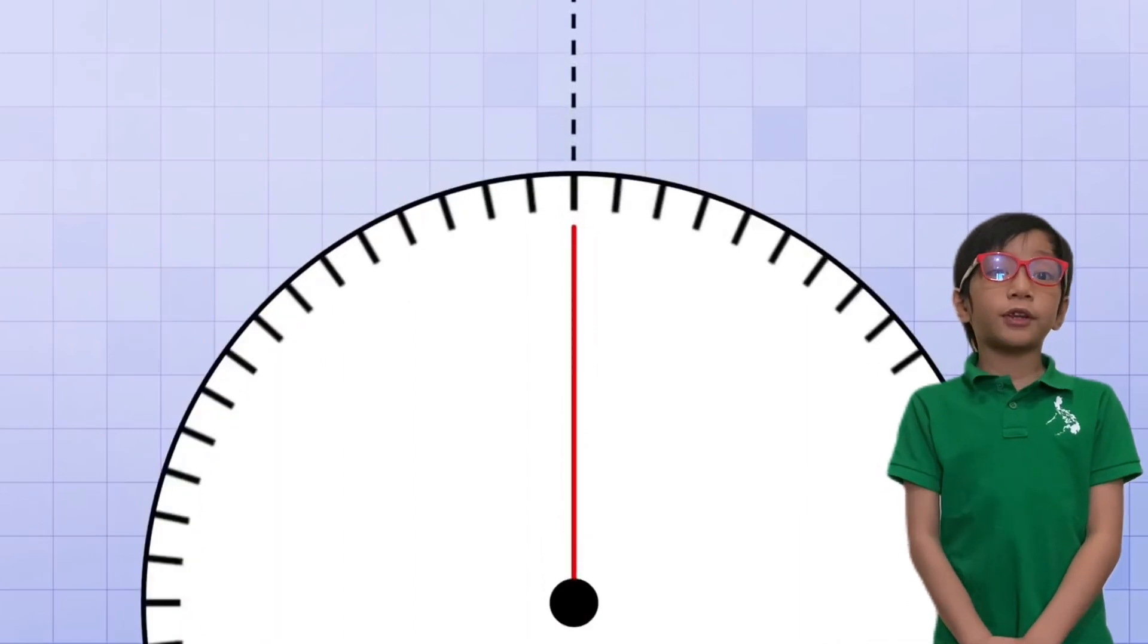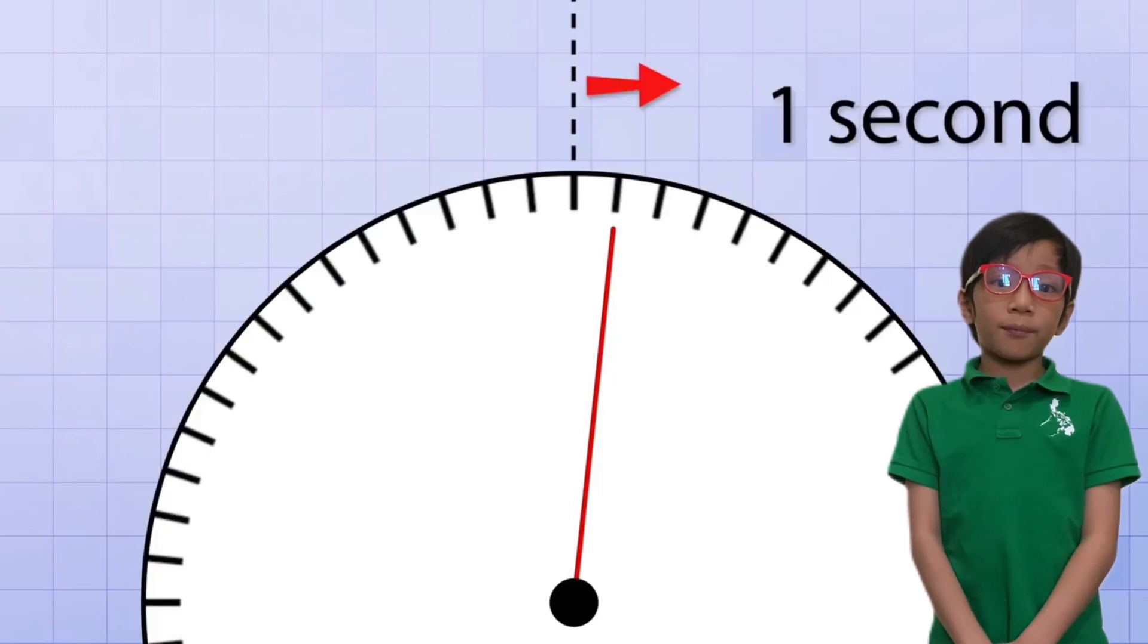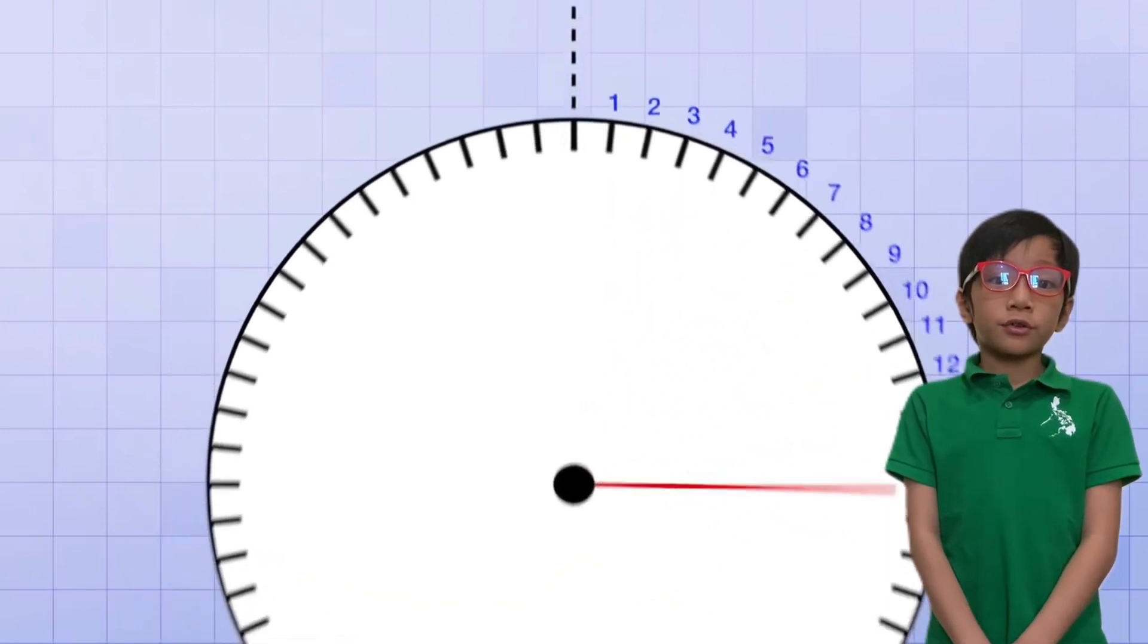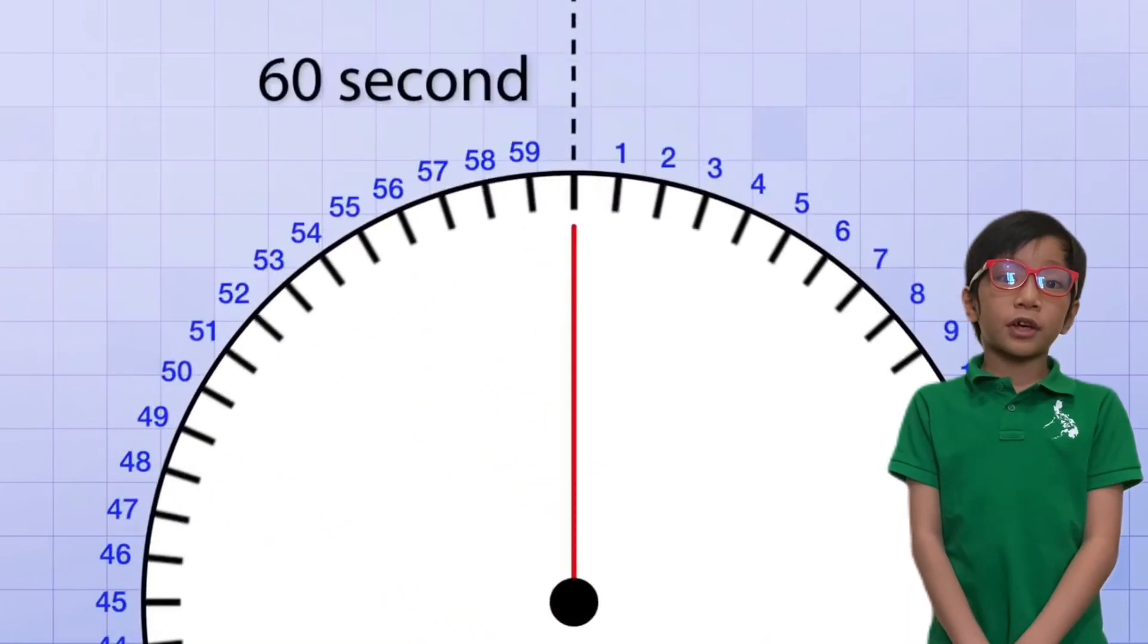If the second hand is pointing up and when it moves to the next line, one second has passed. Next line, two seconds have passed. Next line, three seconds. And when it moves all around the clock, 60 seconds have passed.